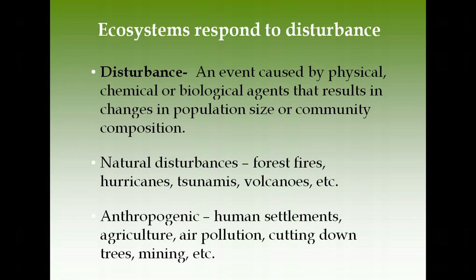A disturbance is an event caused by physical, chemical, or biological agents that results in changes in population size or community composition. Disturbances can be anthropogenic — human-caused — such as developing land, cutting down trees, paving streets, clearing areas for agriculture, air pollution, and mining. These are all disturbances to already-established ecosystems.